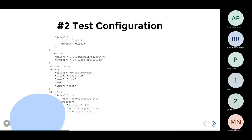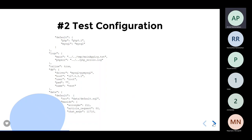Tip number two: test configuration. If you are new to testing, there may be a tendency to hard-code a lot of things in your test cases or test environment. Do not hard-code, because you will be testing multiple scenarios in multiple different environments — on your developer machine, in the cloud for CI/CD, on staging. Certain things will be different in each environment. A useful thing is to have a test configuration file, which you can have as a YAML or JSON file.